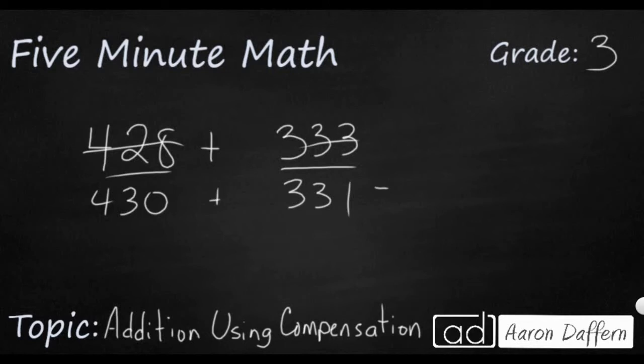Now 430 and 331. That's easier for me to add side to side if I wanted to do it really quick because, as you can see, I'm not going to have to regroup anything. 400 and 300 is 700. 30 and 30 is 60. And 0 and 1 is 1. 761.